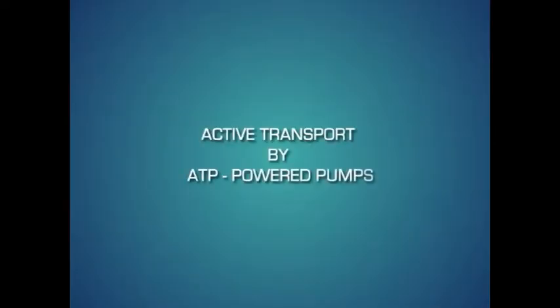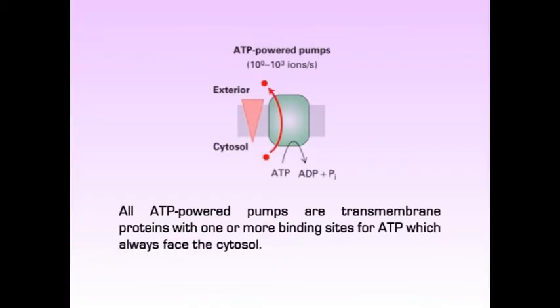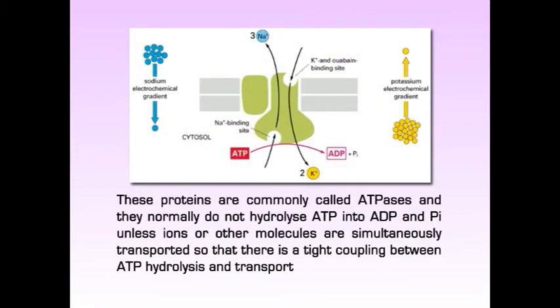Now let's look at active transport by ATP-powered pumps. ATP-powered pumps use the energy of hydrolysis of ATP to transport ions and small molecules across membranes against their concentration gradient. All ATP-powered pumps are transmembrane proteins with one or more binding sites for ATP, which always face the cytosol. These proteins are commonly called ATPases, and they normally do not hydrolyze ATP into ADP and phosphate unless ions or other molecules are simultaneously transported, ensuring tight coupling between ATP hydrolysis and transport.